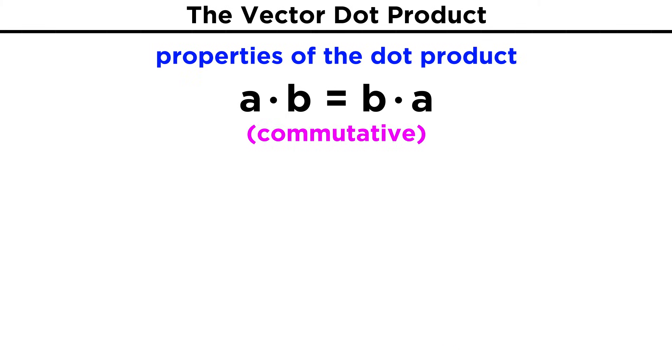Because the dot product involves simple multiplication, it has very intuitive properties. A dot B equals B dot A, because it doesn't matter what order in which numbers are multiplied.